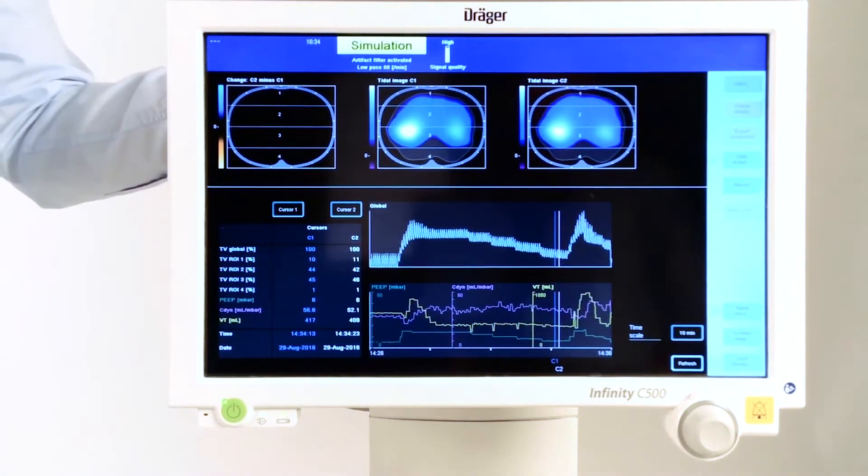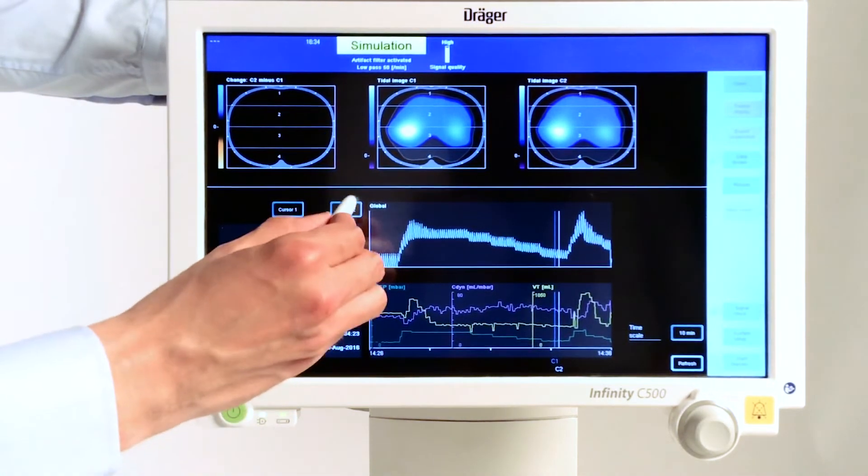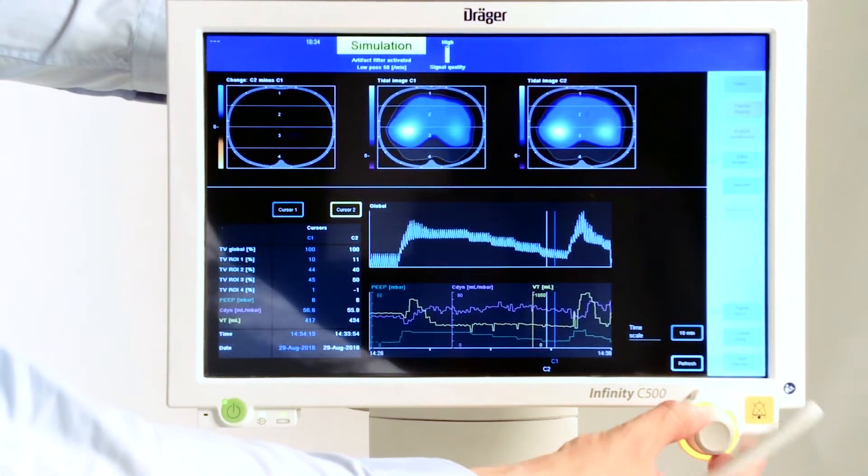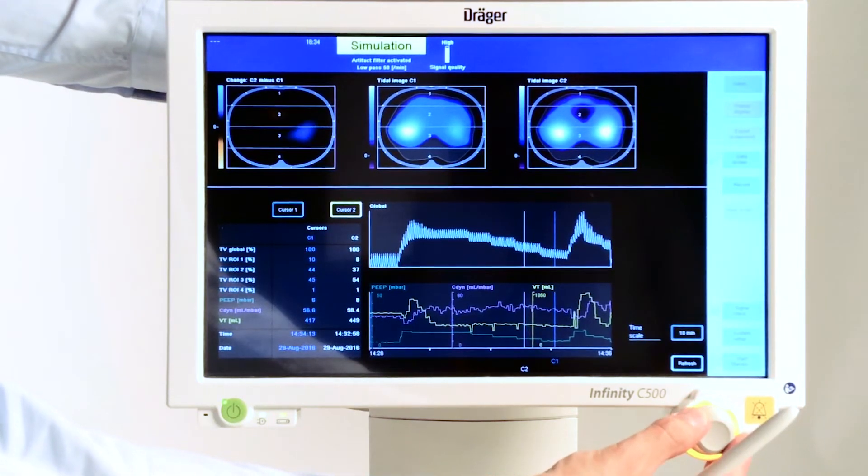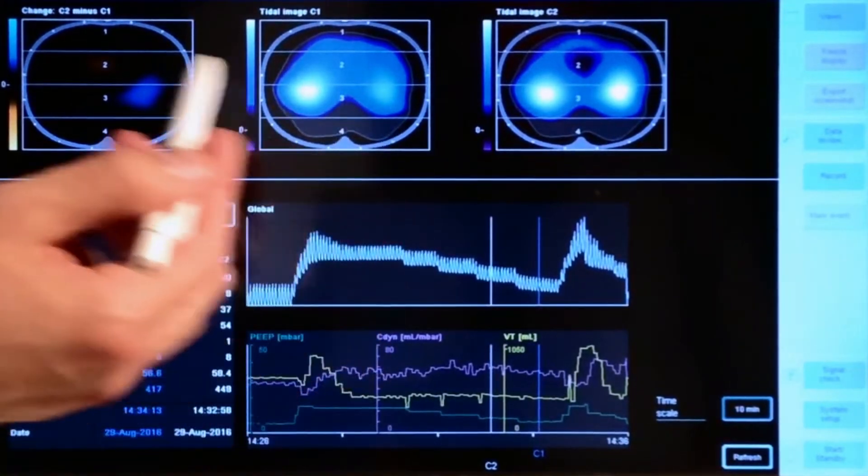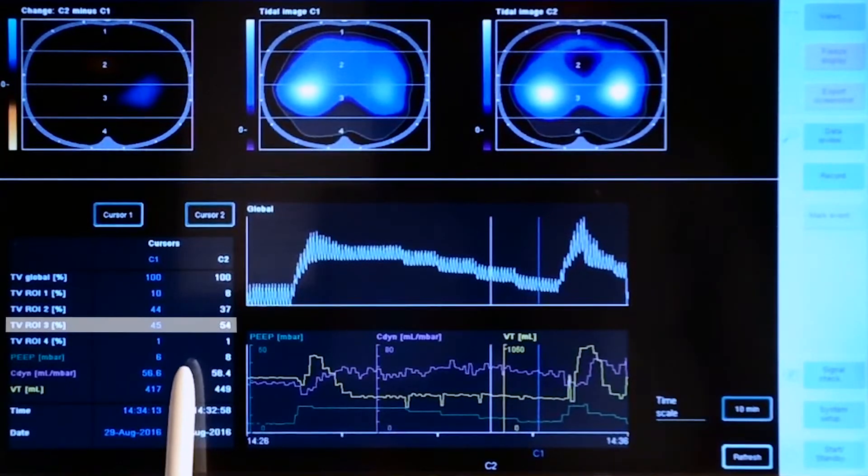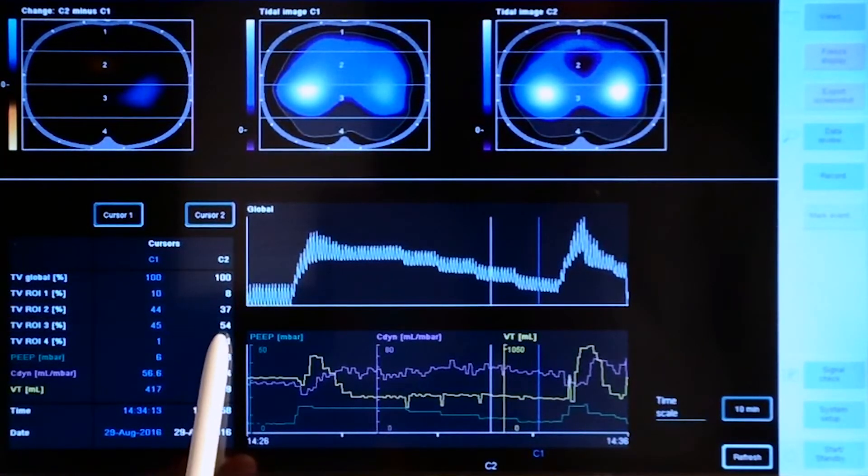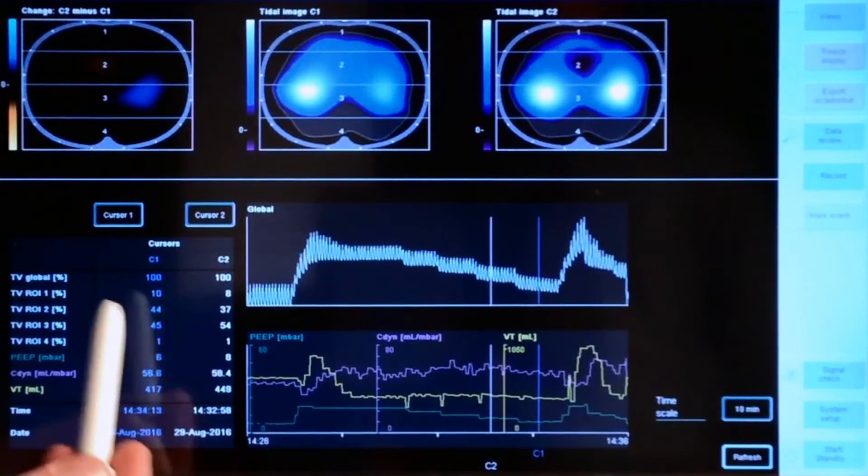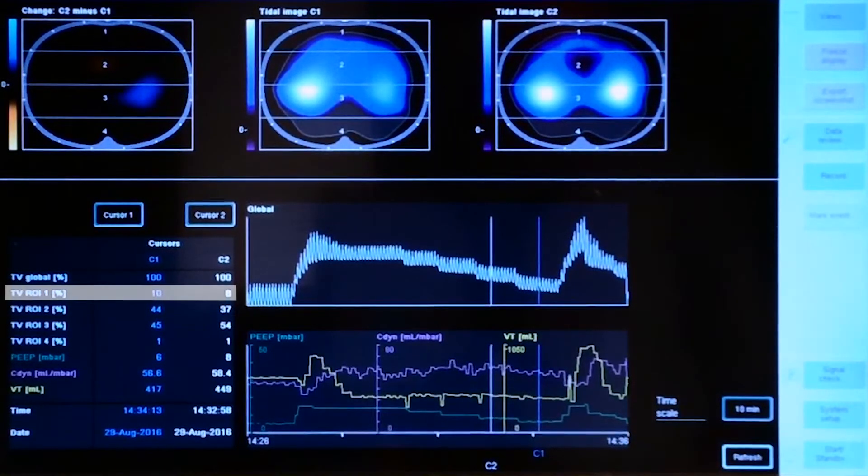At a PEEP level of 6, the occurrence of overdistension is very unlikely. And now we can move cursor 2 backwards to the next higher PEEP level of 8. And when we compare these two images, we do not see a big change. We get slightly more ventilation in region of interest number 3 and we have a little decrease of ventilation in regions number 1 and 2.